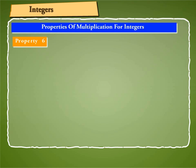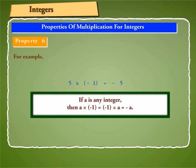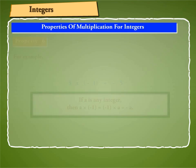Property 6: Let us multiply an integer by minus 1. For example, 5 into minus 1 is equal to minus 5. Hence, if A is any integer, then A into minus 1 is equal to minus 1 into A is equal to minus A.